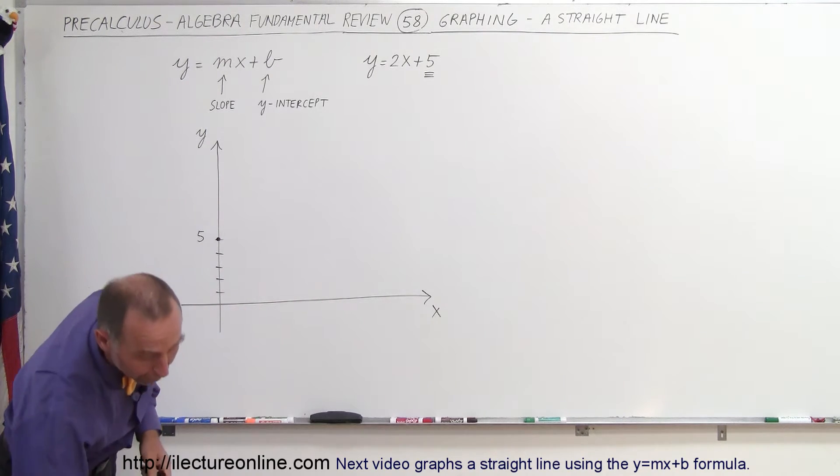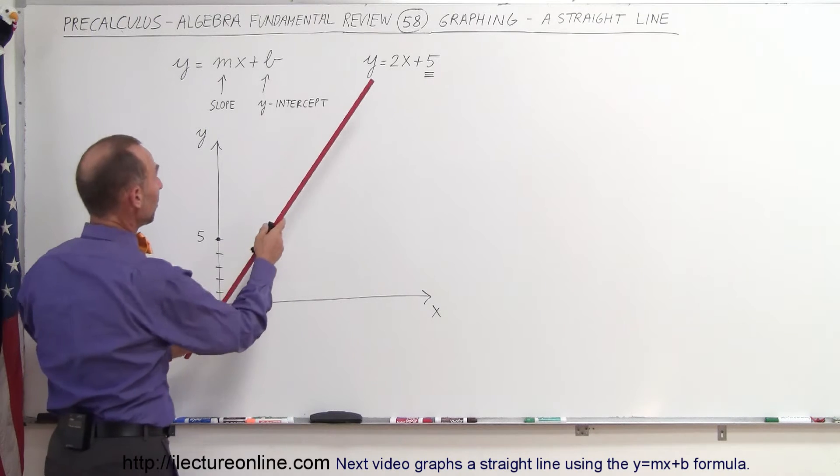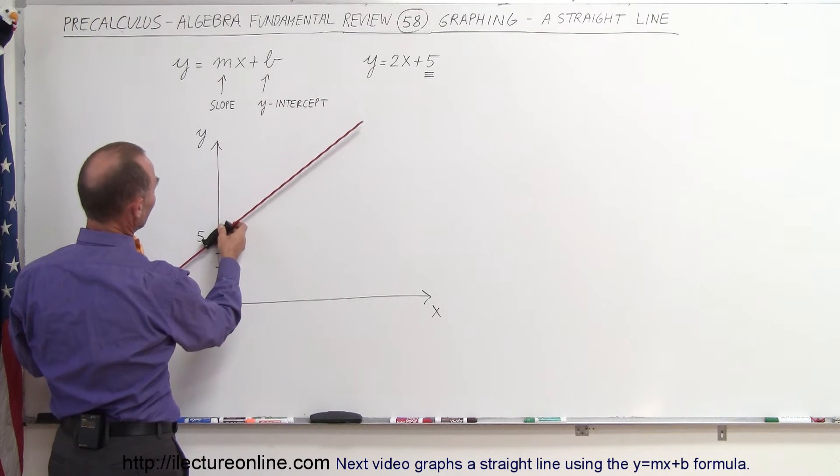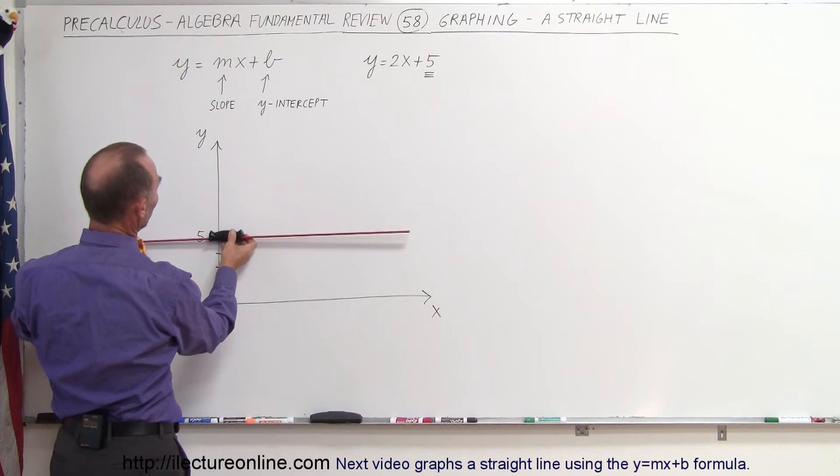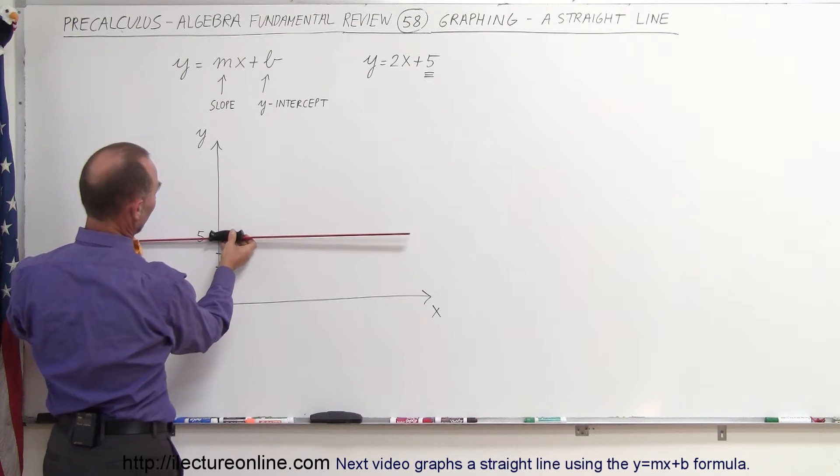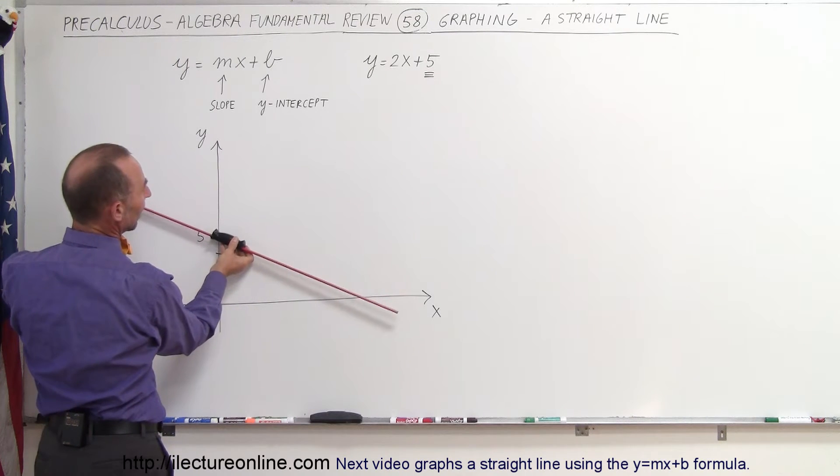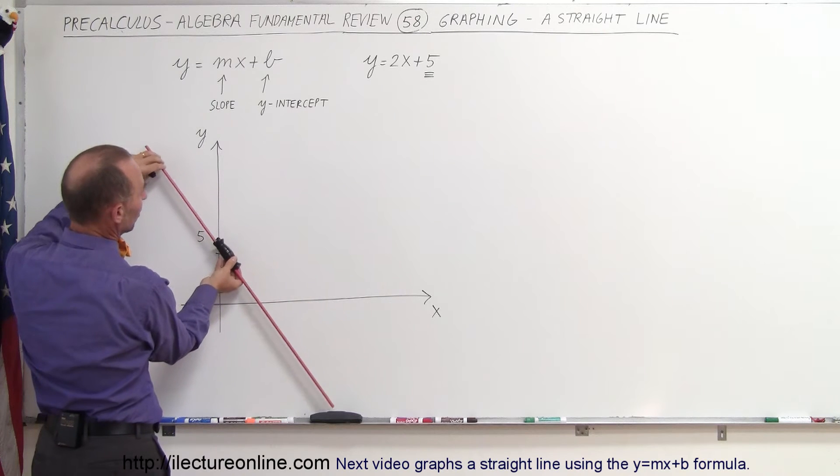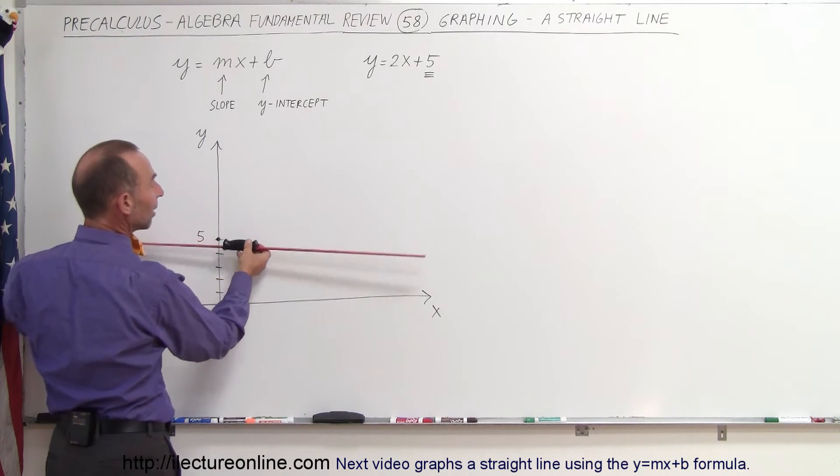Now, will the line be steep? Well, if the slope is steep, the line will be like this. If the slope is less steep, then it will be like that. If the slope is zero, the line will be like this, and if the slope is negative, the line will be like that. The bigger the number, the steeper it is. The smaller the number, the less steep the line is.